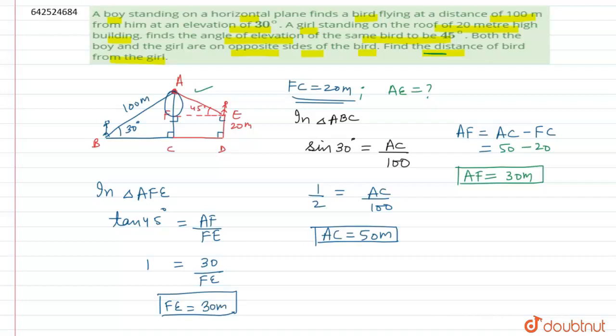Now we can easily find the value of AE by using Pythagoras theorem, or you can use sine rule also. So let us use sine rule. Sine 45 degrees will be equal to perpendicular upon hypotenuse, that is AF upon AE. So AF value is 30 and AE value we have to find out. So sine 45 will be equal to 1 by root 2, that will be equal to 30 upon AE. And AE will be equal to 30 root 2 meters. So this will be the final answer that we need to calculate, that is the distance between the bird and the girl will be equal to 30 root 2 meters.